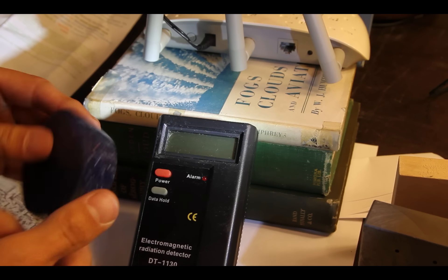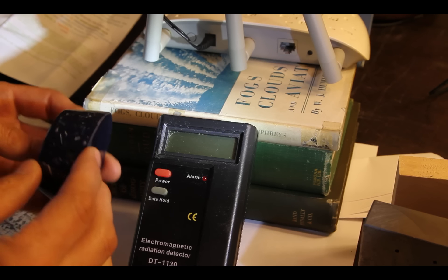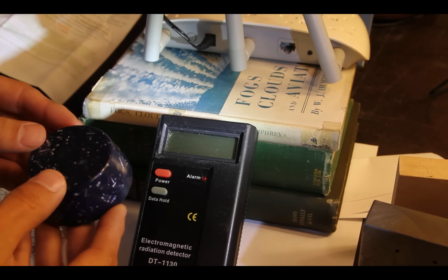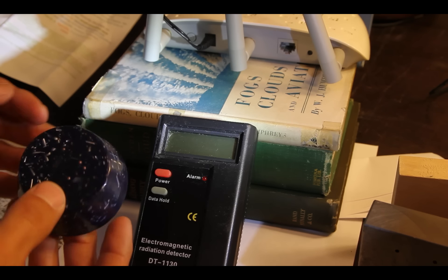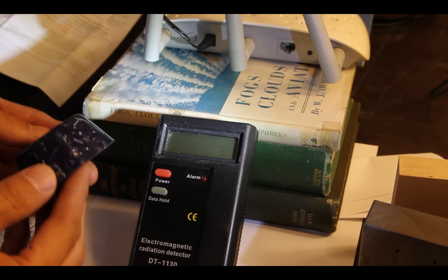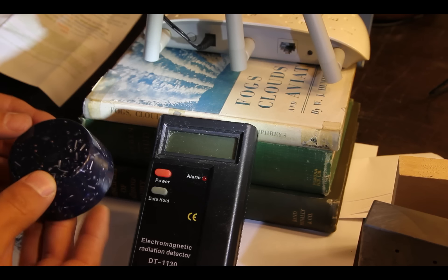Orgonite is supposed to generate or gather orgone energy, which is a kind of theoretical fundamental life force of the universe, like the ancient concepts of chi or prana. So it's a kind of modern crystal type thing you can focus this mystical energy with it.